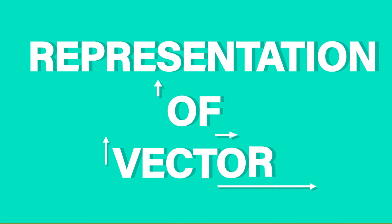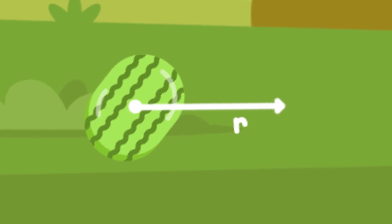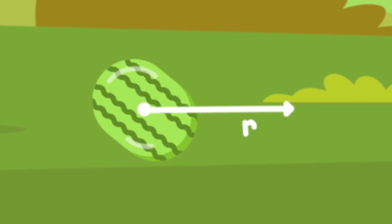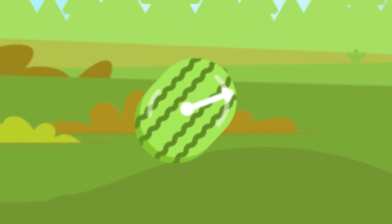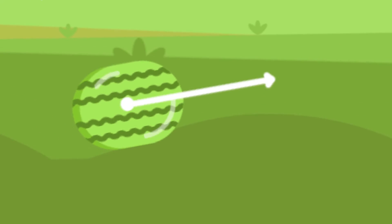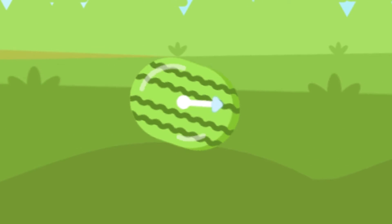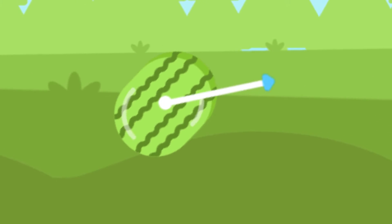Representation of a vector. A straight line parallel to the direction of the given vector is used to represent it. Length of the line on a certain scale specifies the magnitude of the vector. An arrowhead is put at one end of the line to indicate the direction of the given vector.